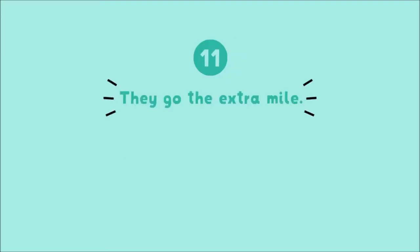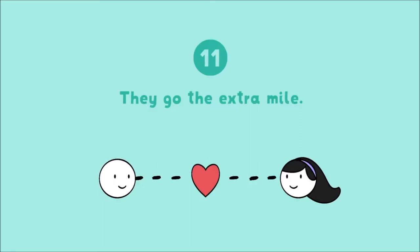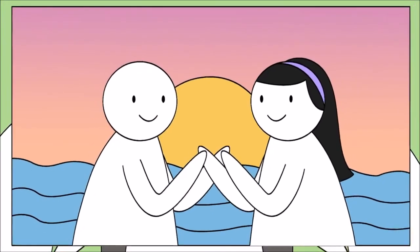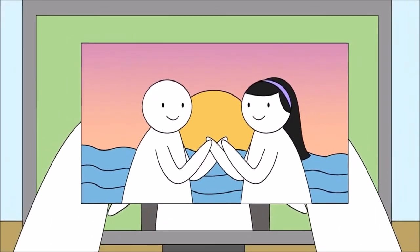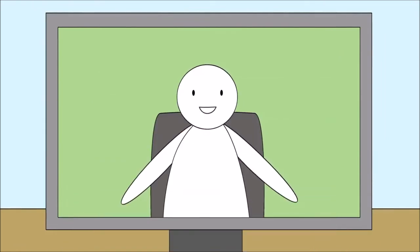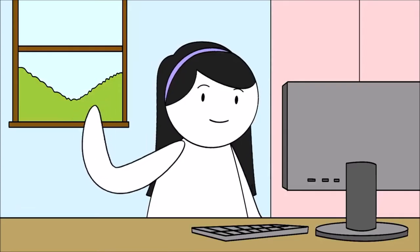11. They go the extra mile, both literally and figuratively. They enjoy their space so long-distance relationships don't scare them away. If they always check in on you and go out of their way to do you favors, they definitely have a soft spot for you.